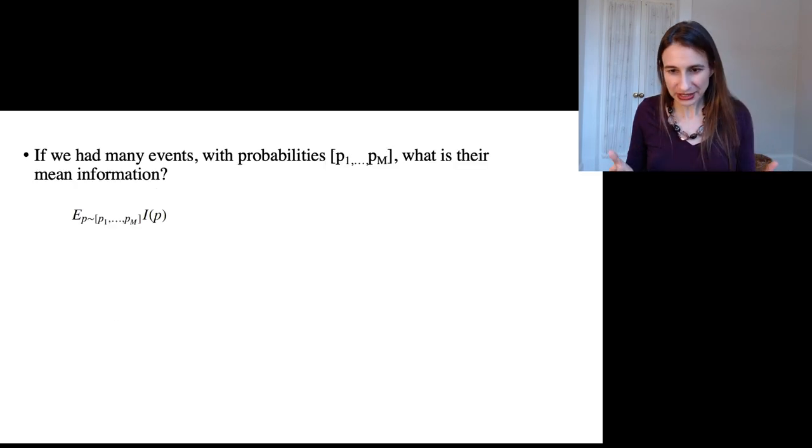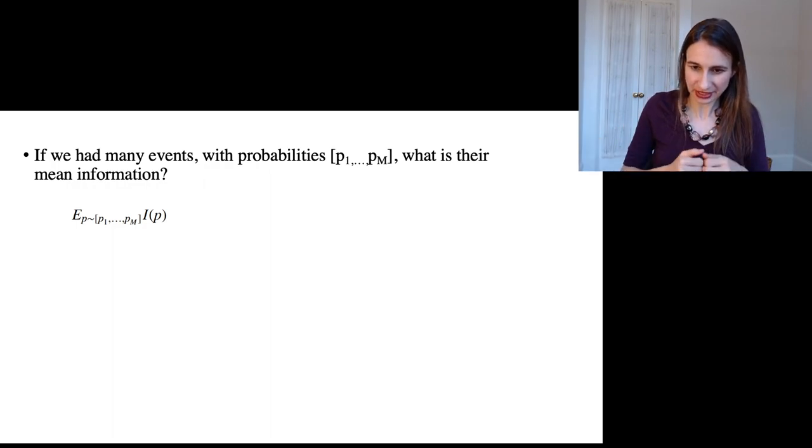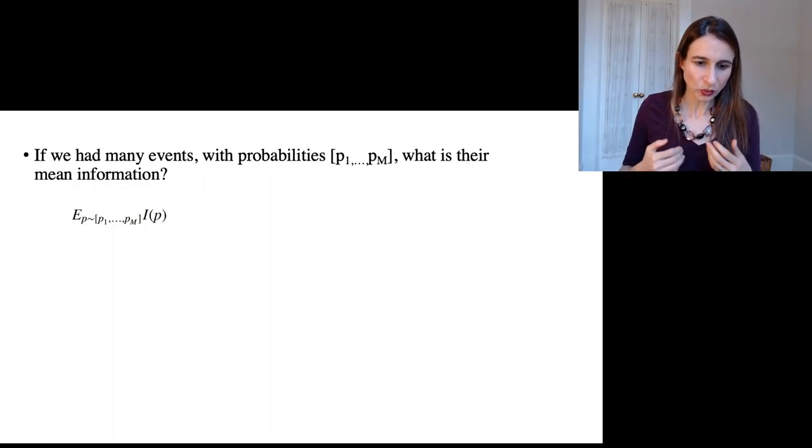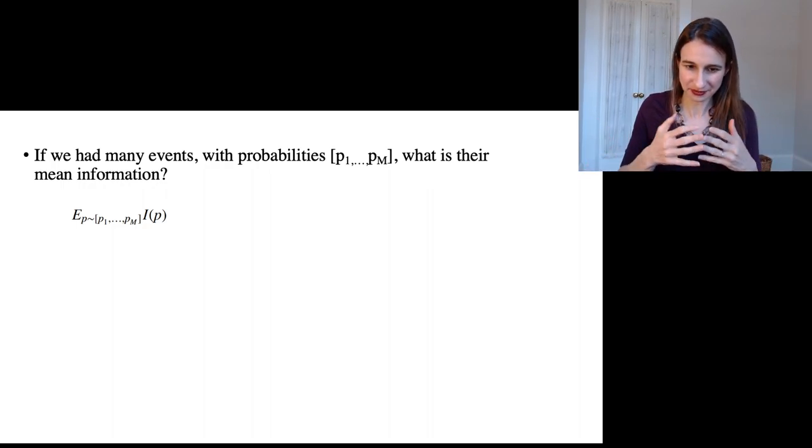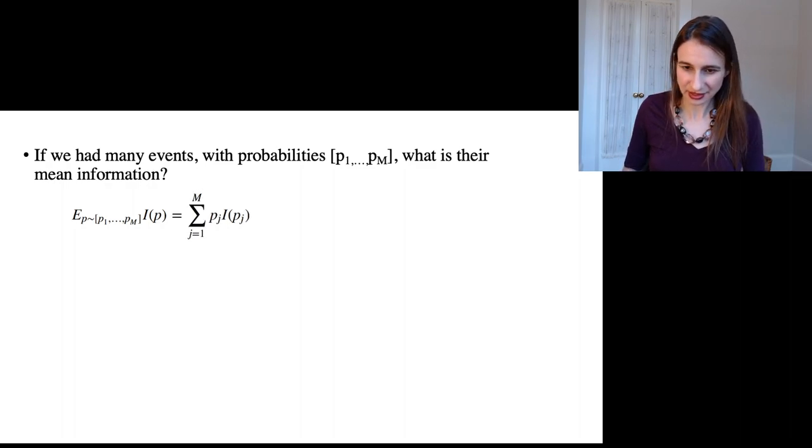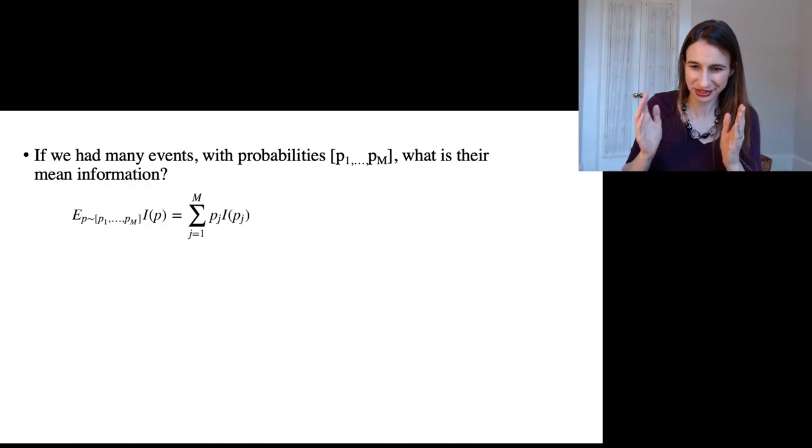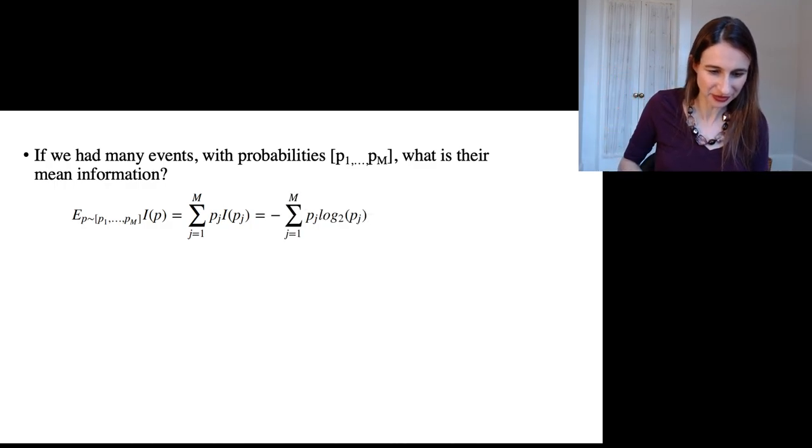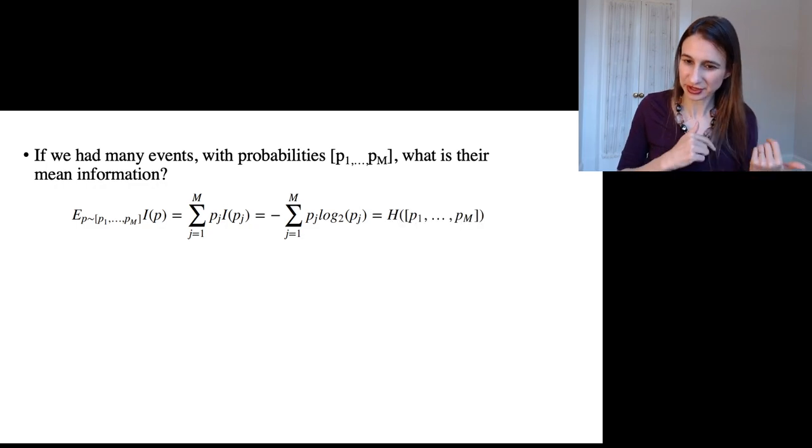If we had many events with a set of probabilities, what is their mean information? What's the average information from seeing events with these probabilities? Using the definition of expectation, each outcome weighted by its probability, putting in the definition of information there, that defines entropy.